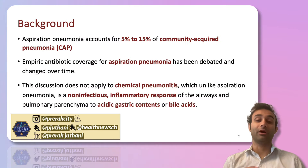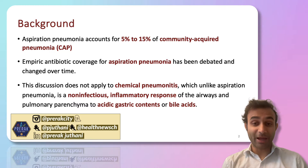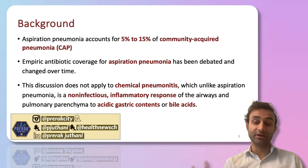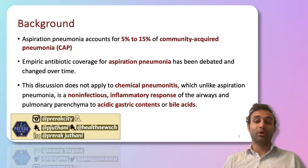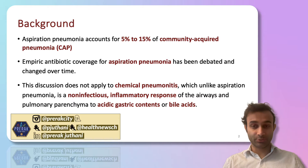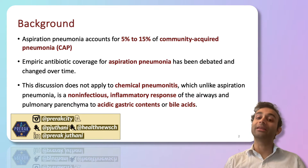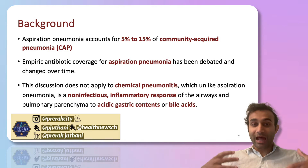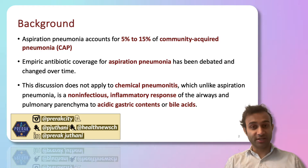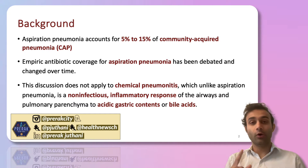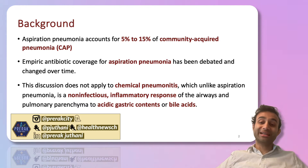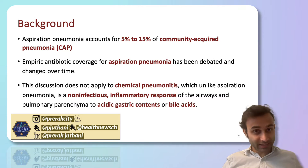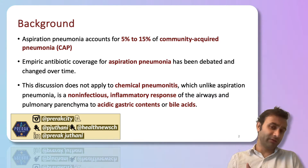I want to give you the background for this, and I'll share some citations. Aspiration pneumonia accounts for 5% to 15% of community-acquired pneumonia. Community-acquired pneumonia means you did not get the pneumonia after being in the hospital or having recently been discharged. The diagnosis of pneumonia usually presents with symptoms like a cough, shortness of breath, or hypoxia, and we get a chest x-ray that shows infiltrates within the lungs, which is often enough to diagnose pneumonia.